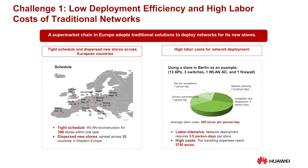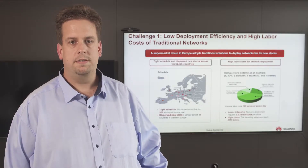In this real-life example, a retail chain in Europe planned a rollout for about 300 stores. Based on a very tight schedule and wide distribution of new stores across the European Union, they suffered extremely high labor costs for network deployment.